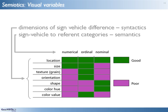Bertin proposed a set of rules for how the visual variables and variation within them should be used. These rules focus on sign semantics — how the sign vehicle to referent relations will be interpreted. He proposed that some visual variables are good for only numerical distinctions (distinctions in amount), some are good only for nominal distinctions (distinctions in kind), some work only for ordinal distinctions (distinctions in rank), and that location can work for all of these.